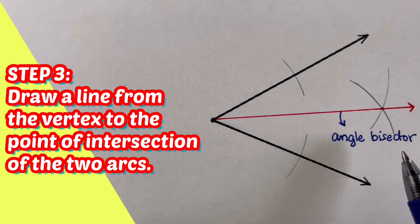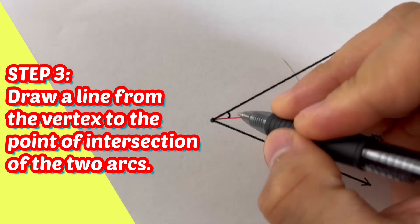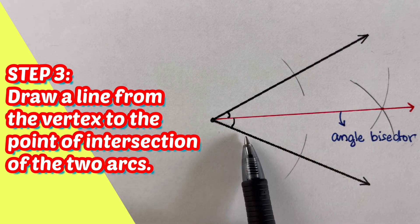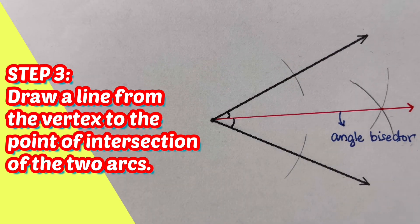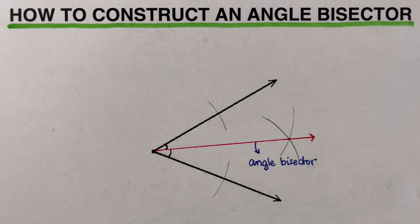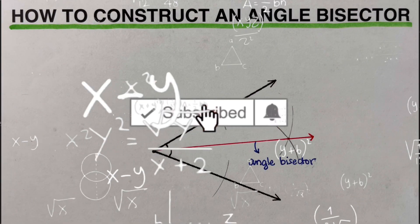Since this is our angle bisector, the two angles — the first half and the second half of the original angle — are congruent, because the whole angle was cut into two equal pieces. Remember that all three steps still work if the given angle is a right angle, and they also work even if the angle is obtuse. That is how we construct an angle bisector using a compass and a straight edge or ruler. If you found this video helpful, hit like and subscribe for more math videos.